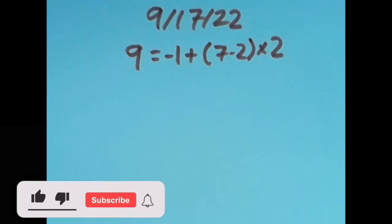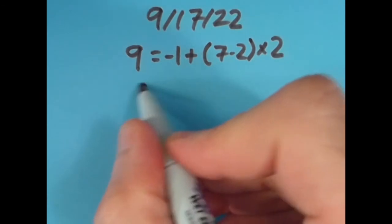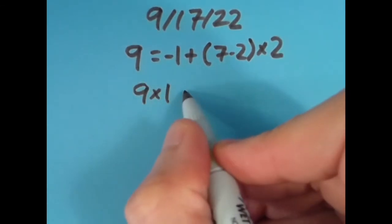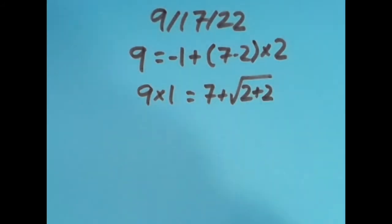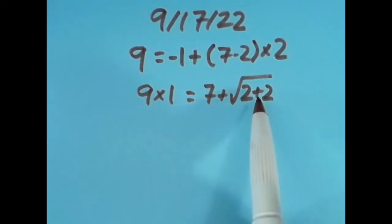So that's what I did, but I tried it a few other ways. I moved the equal sign one spot to the right and came up with this: that 9 times 1, which is 9, equals 7 plus the square root of 2 plus 2. 2 plus 2 is 4, square root of 4 is 2, and 7 plus 2 is also 9.